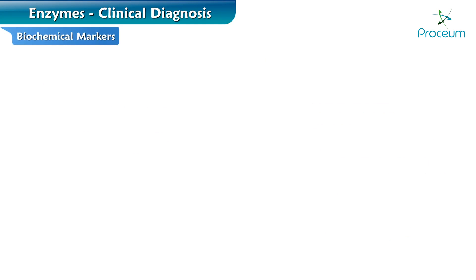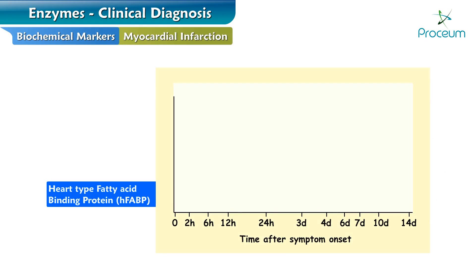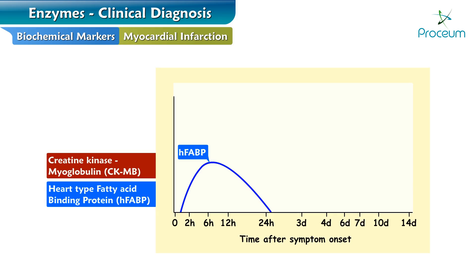Here are some biochemical markers of myocardial infarction. The first is heart-type fatty acid binding protein, or H-FABP. This appears in plasma 60 minutes after cellular injury, peaks at 6-12 hours, and returns to baseline by 1 to 1.5 days. The second marker is creatine kinase myoglobin, or CKMB. It appears in plasma 3-6 hours following chest pain and reaches peak activity at 12-24 hours.